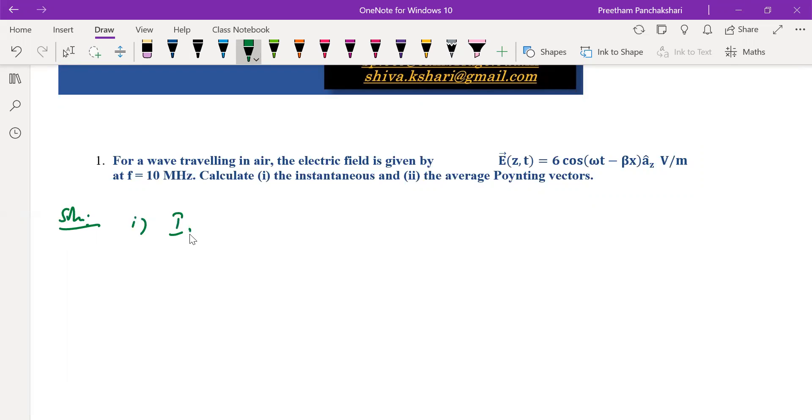Instantaneous Poynting vector is very direct. It is given by the cross product of E and H. We have E and we have to define H in terms of E, then perform the cross product.